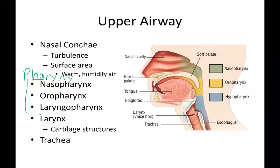The pharynx has three distinct regions. The nasopharynx is at the top, behind the nasal cavity. The oropharynx is behind the oral cavity. And the laryngopharynx, also called the hypopharynx, is right above the larynx. Those are the three subgroups of the pharynx.